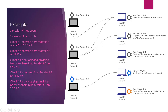Client account number three is also set to copy from SPID 1, but it is set to copy from selected accounts and has account number five listed. Since we don't have a master account number five in this example, this client will not follow any trades. It will just wait for master account five to appear within SPID 1. Client account number four is set to copy from all accounts within SPID 2, where master account number three is operating, so it will copy trades from that master account.